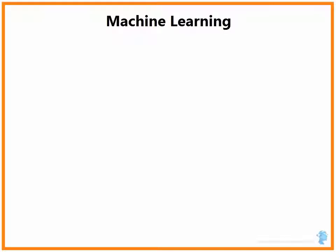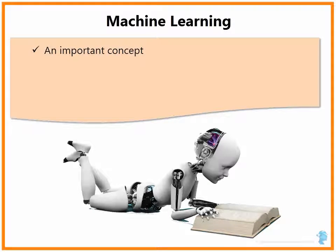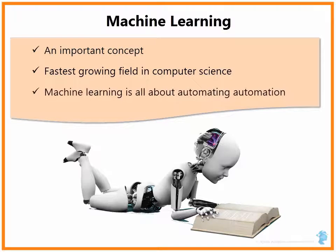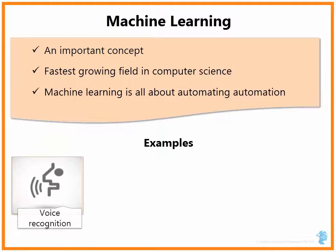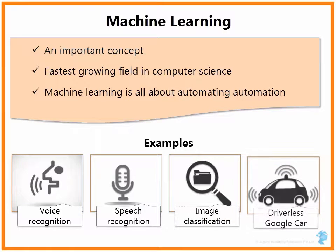Before we get into Bagging and Boosting, I would like to have a quick recap of Machine Learning. Machine Learning is a very important concept and the fastest growing field in Computer Science. It is important to understand and have a thorough grasp on Machine Learning as these techniques are in high demand. Machine Learning is all about automating automation, with examples like Voice Recognition, Speech Recognition, Image Classification, and the Driverless Google Car.